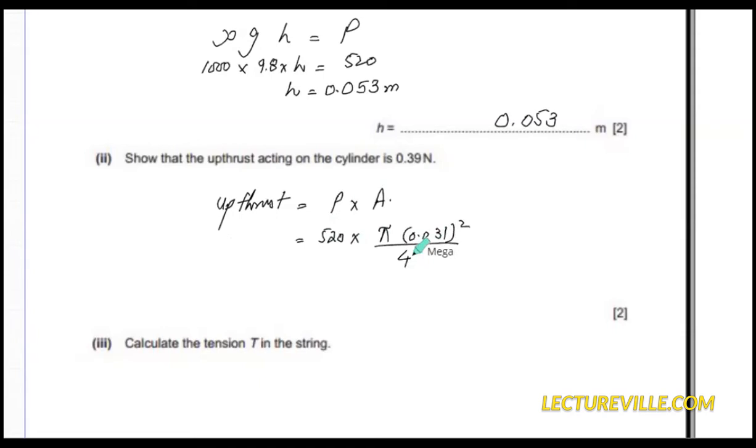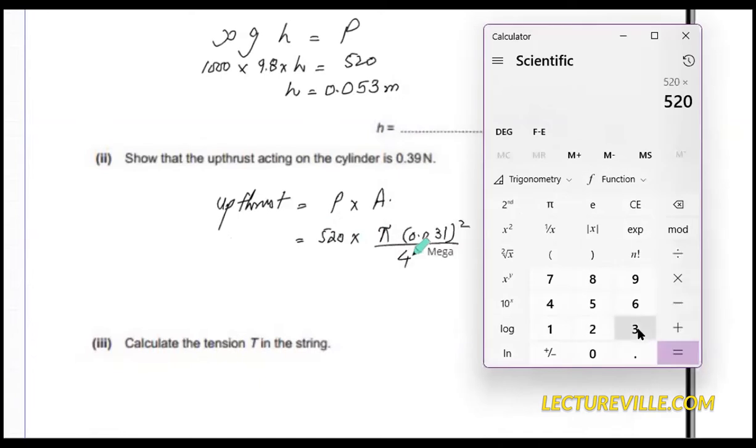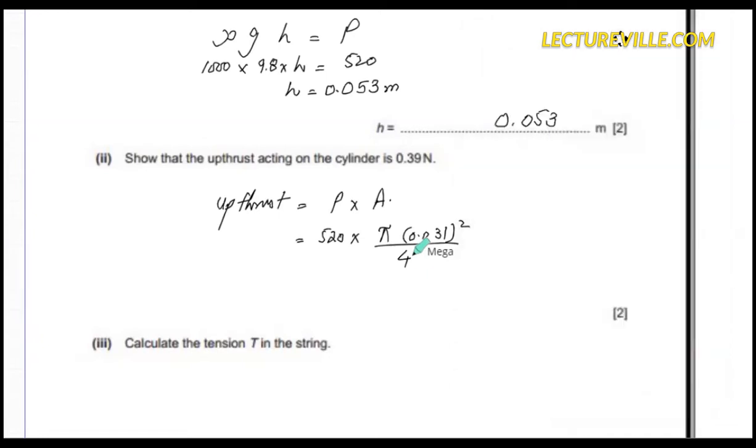520 multiplied by pi, multiplied by 0.031 squared, divided by 4 equals 0.3922, which is 0.39 newtons.